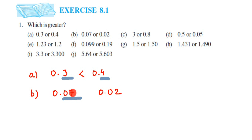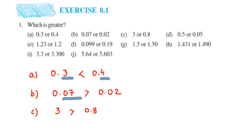The next question: 3 and 0.8. Three is a whole number and 0.8 is a decimal number. In 0.8, the whole part is zero. Three is obviously greater than zero, so 3 is greater than 0.8.